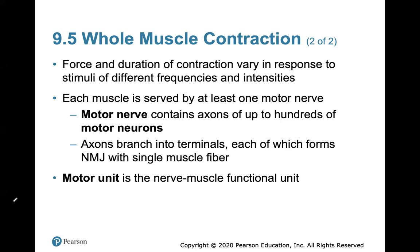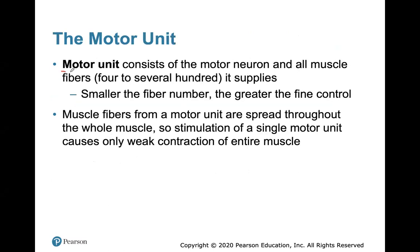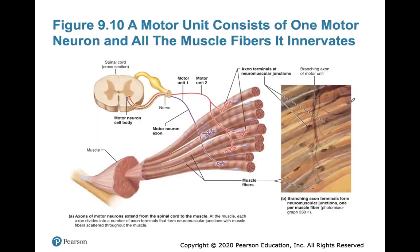Each muscle is served by at least one motor nerve, and motor nerves contain axons of up to hundreds of motor neurons. Axons branch into their terminals, each forming a neuromuscular junction with a single muscle fiber. A motor unit — the nerve-muscle functional unit — consists of the motor neuron and all of the muscle fibers it supplies, from four fibers to several hundred. The smaller the fiber number, the greater the control; finger muscles have very fine control with smaller motor units. Stimulation of a single motor unit causes only weak contraction of the entire muscle.